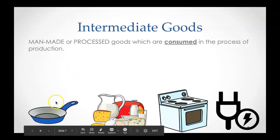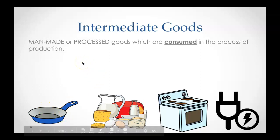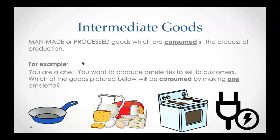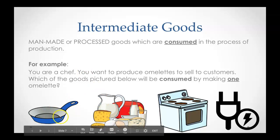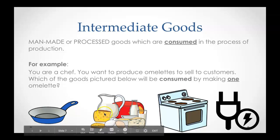Some of these are intermediate goods and some are not. Imagine you're a chef and you want to produce omelets to sell to customers. Which of the goods pictured will be consumed by making one omelet — the pan, or the eggs, cheese, and milk? Of course, it's the cheese, egg, butter, and milk that will be consumed, not the pan, nor the milk pitcher.